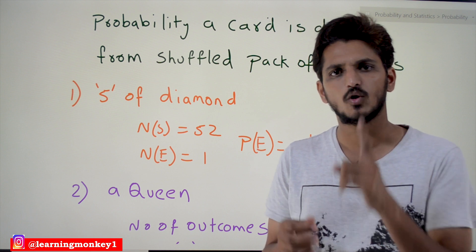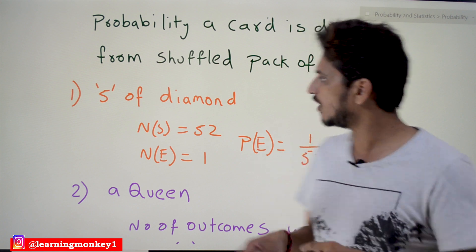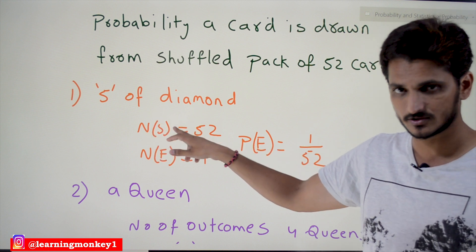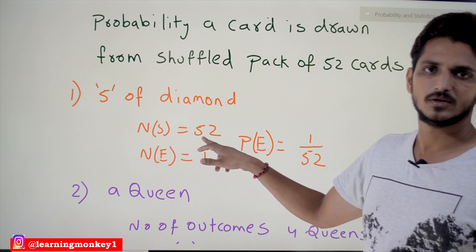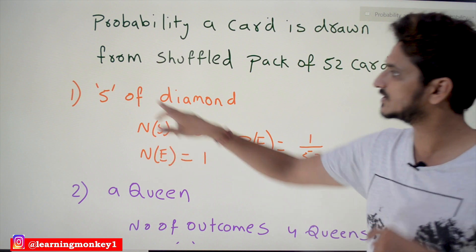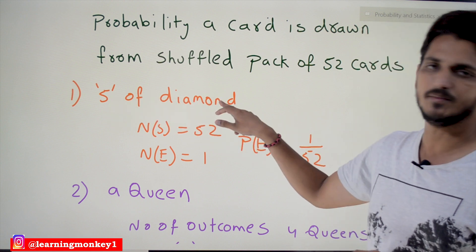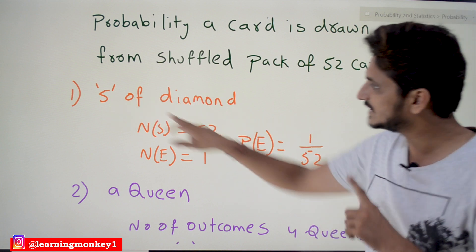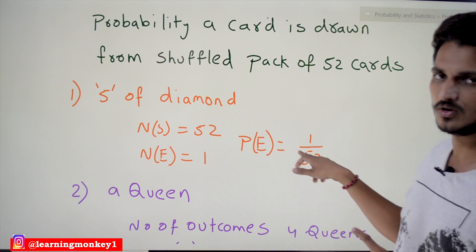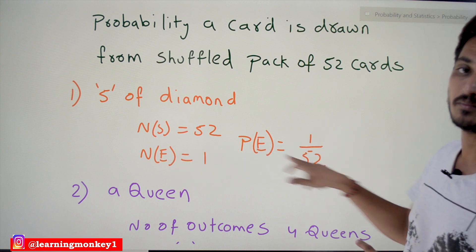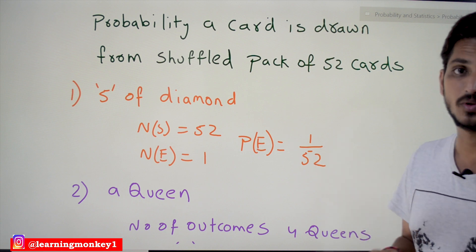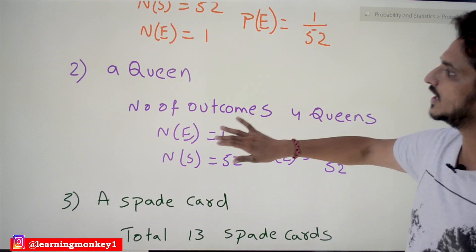Only one card matches our event — the five of diamonds. Our sample space has 52 elements. The number of elements in our event is 1. Probability of the event equals number of elements in the event divided by number of elements in the sample space, which is 1/52. This is how we find the probability value.